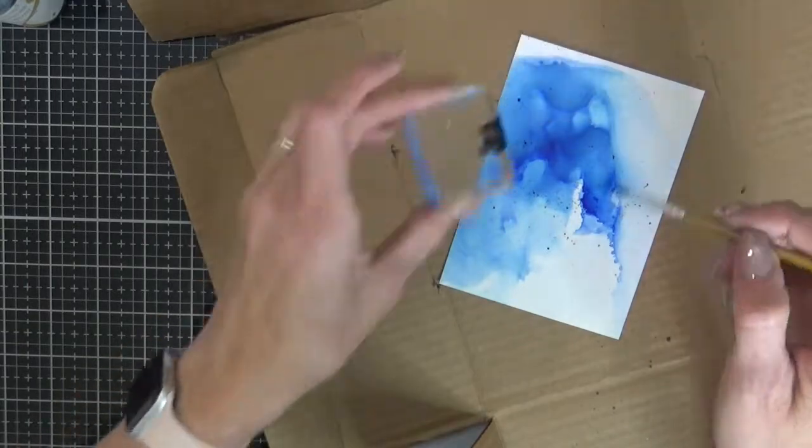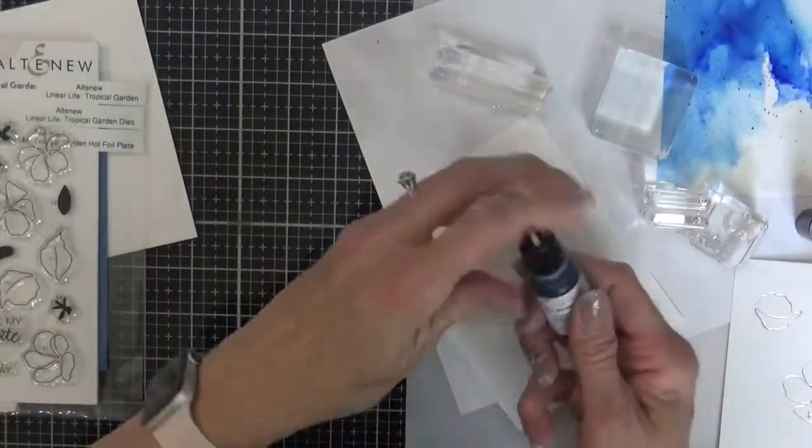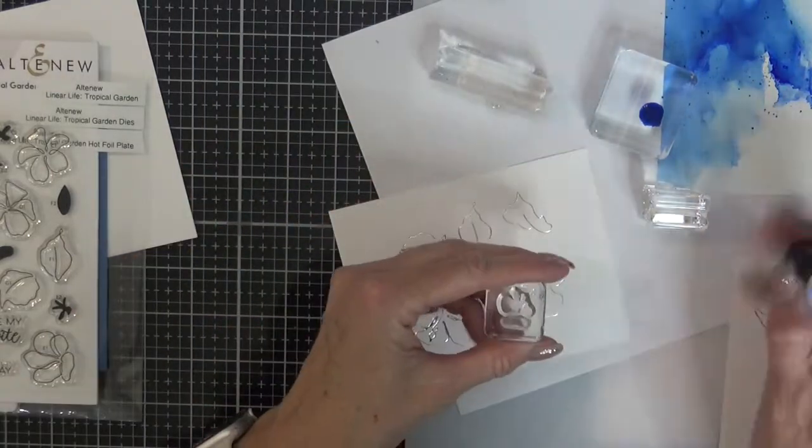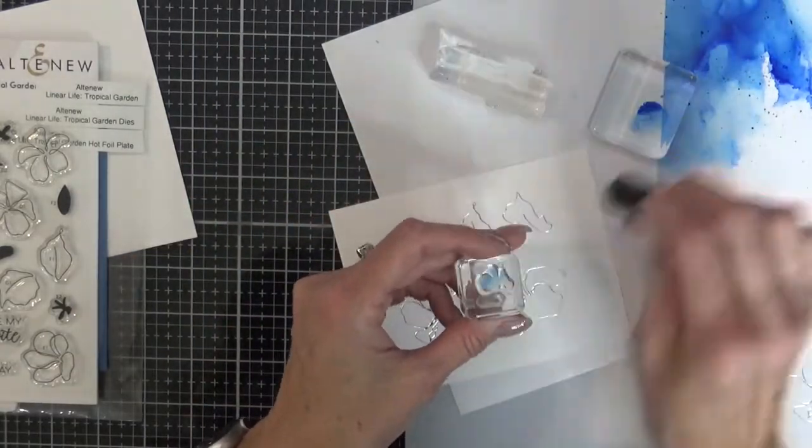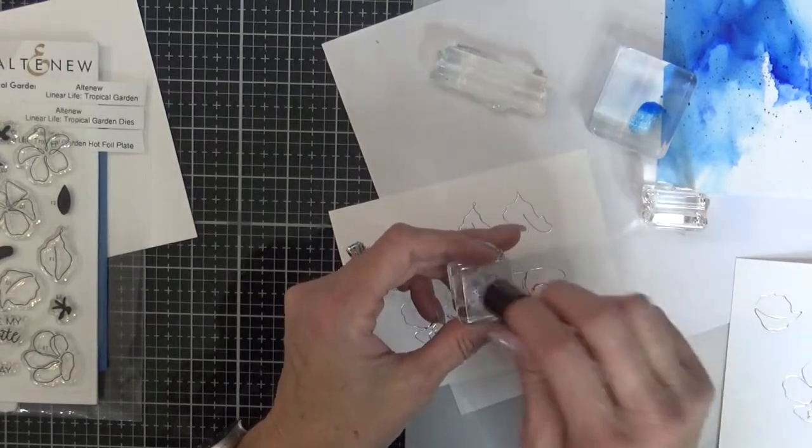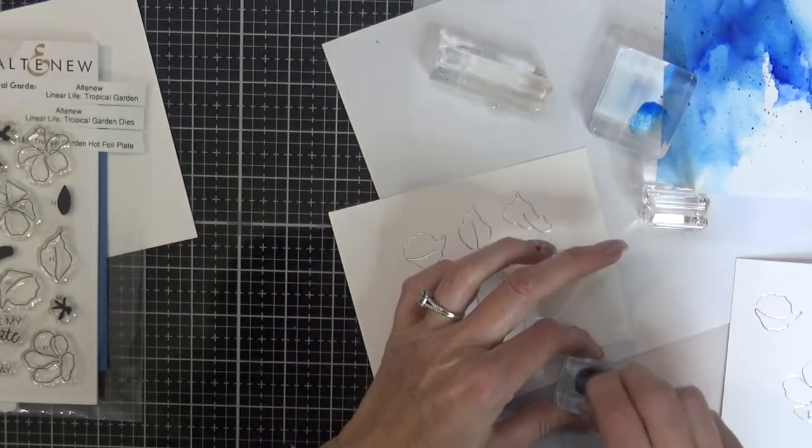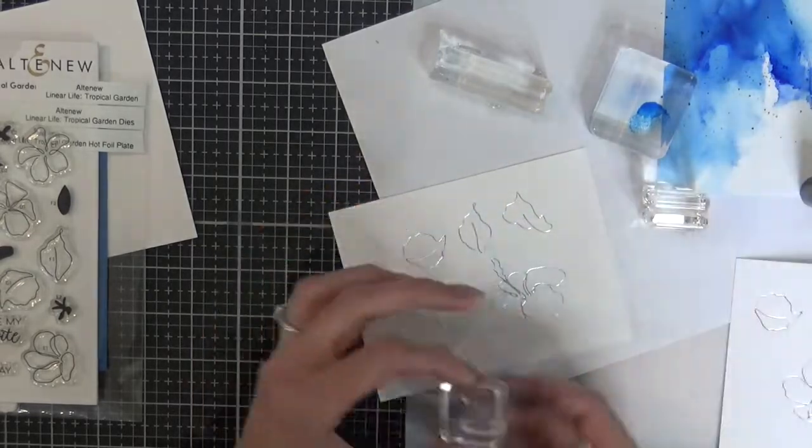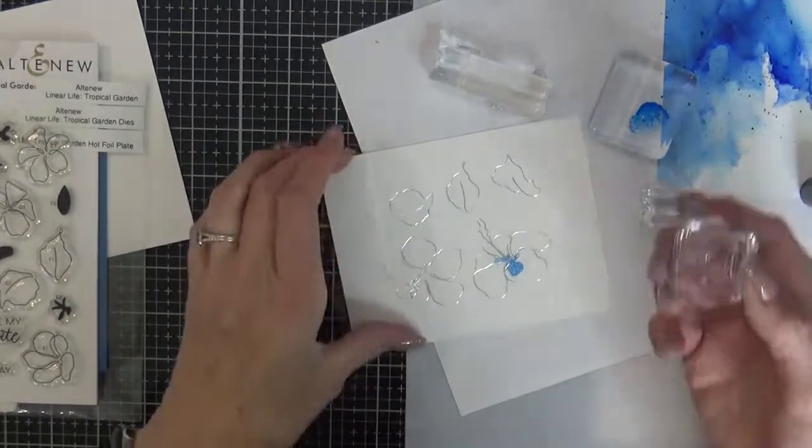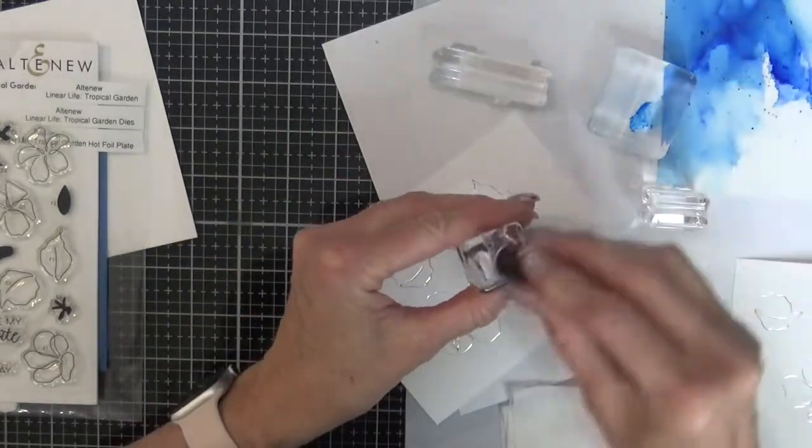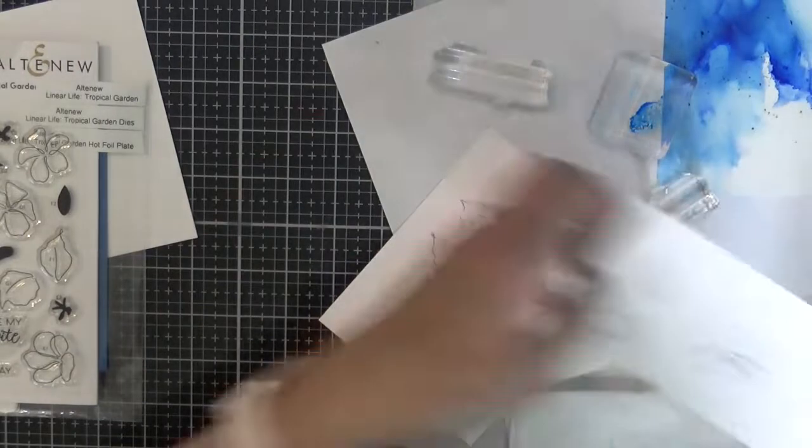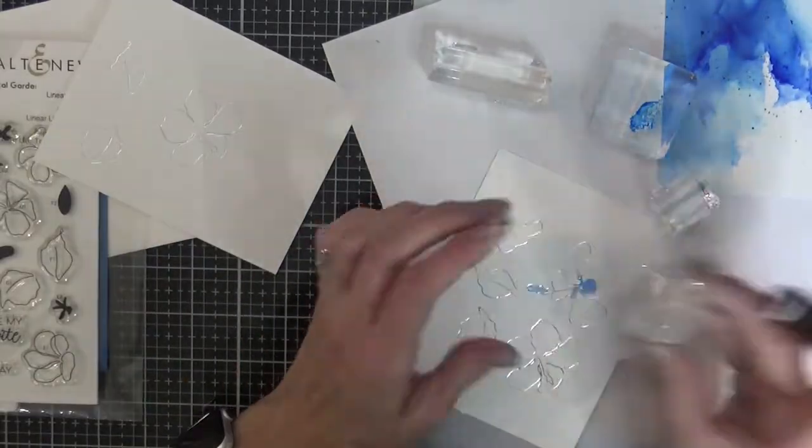And for the third way of using the ink refills I'm going back to the Eastern Sky and I'm going to use a sponge dauber and apply it directly to my stamp. That's the Linear Life Tropical Garden stamp set and I'm adding in those center details on the foiled images and then I'll use the dies and cut them out.